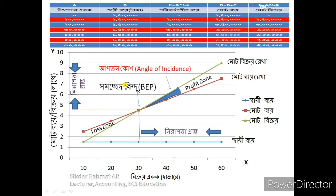The next step is to look at the opposite side of the slope. By the angle of incidence, this zone is a profit zone. The distance is greater than this.